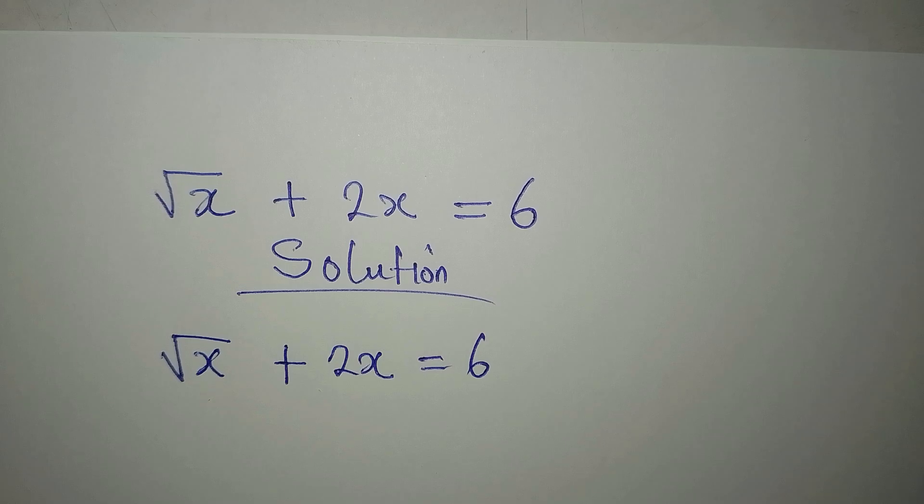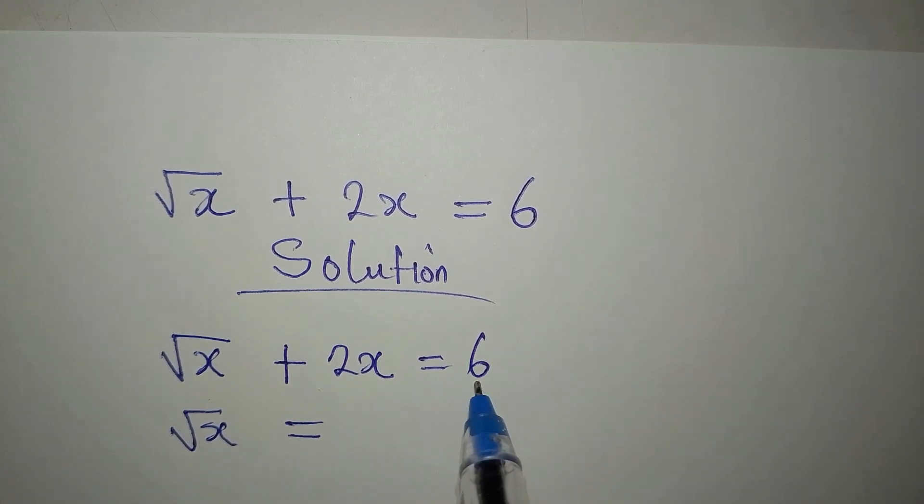Our target is to make root x the subject. So we have root x to be equal to 6 minus 2x.